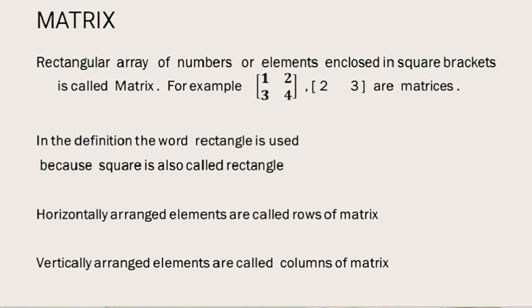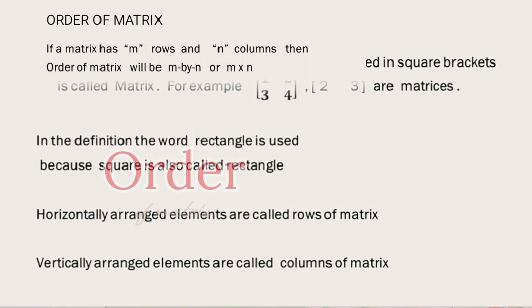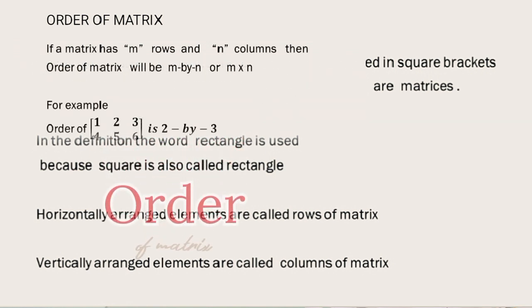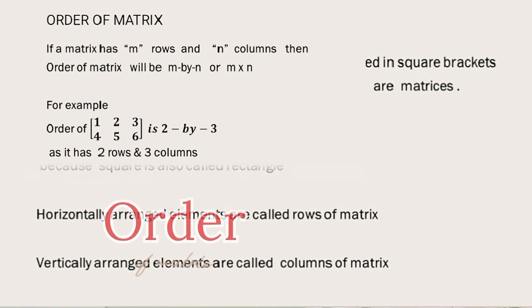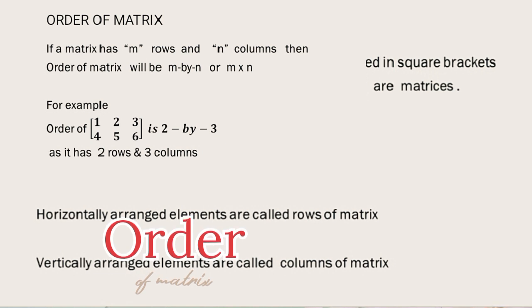A very important thing is order. When we add or multiply, we should know the order of matrix. The order of matrix is simply row by column. If a matrix has M number of rows and N number of columns, the order of matrix will be M cross N.